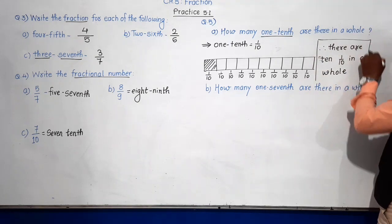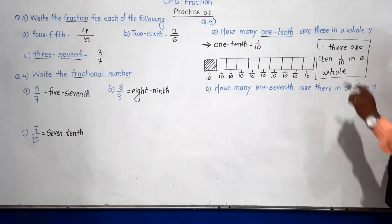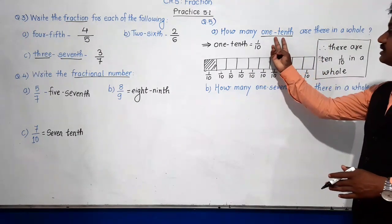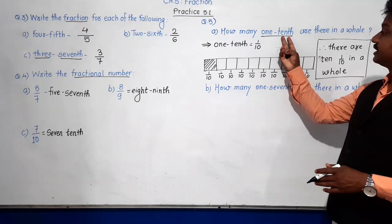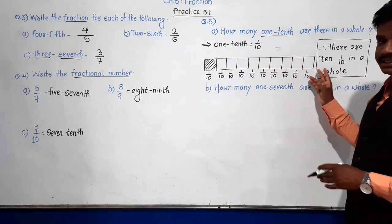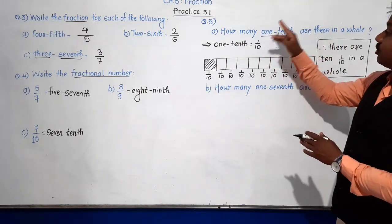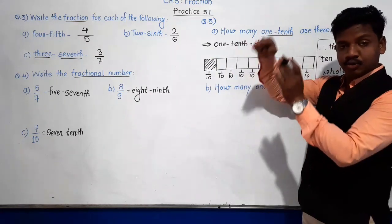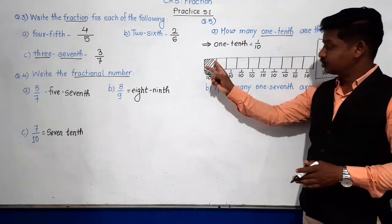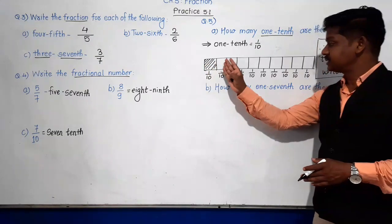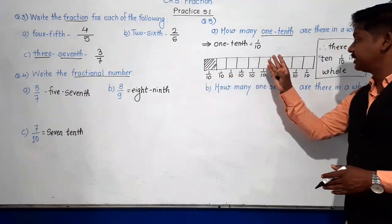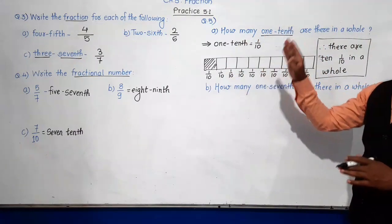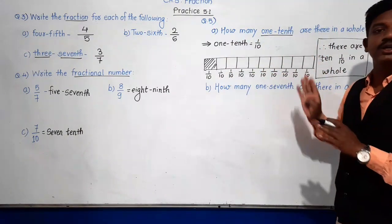Understood? So there are ten one-tenths in a whole. The meaning is clear — one-tenth: ten represents the total equal parts in that chocolate, and out of ten there is one above the bar, meaning one is shaded. This one part indicates one-tenth. Similarly, all the remaining parts each indicate one-tenth. So ten one-tenths are there in this whole chocolate.